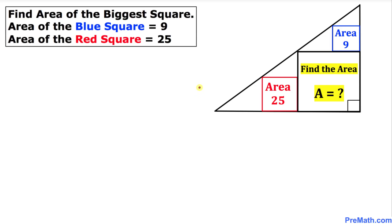Welcome to pre-math. In this video tutorial we have three squares of different sizes that are inside a right triangle. The area of the smaller square is 9 square units, while the red square is 25, and we are asked to find the area of the biggest square.